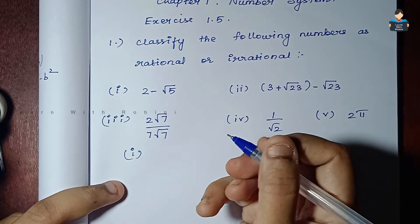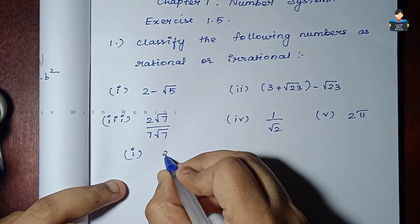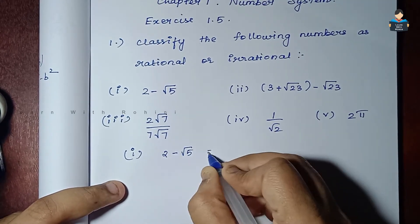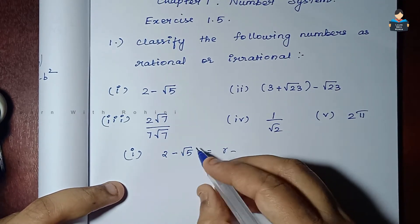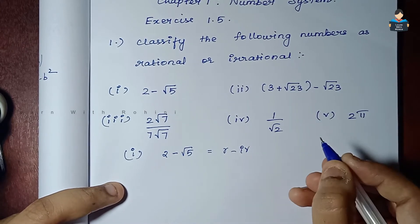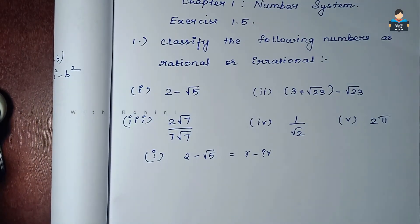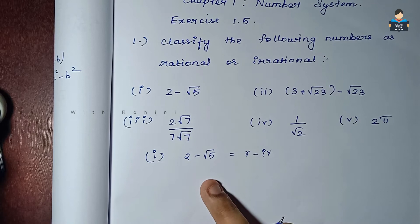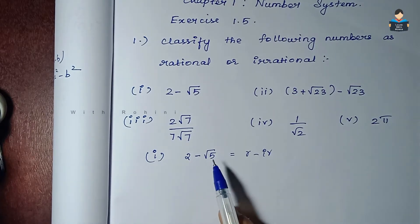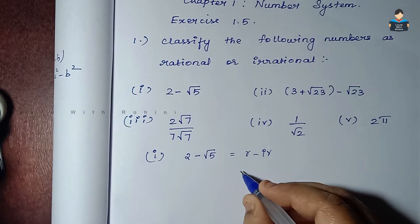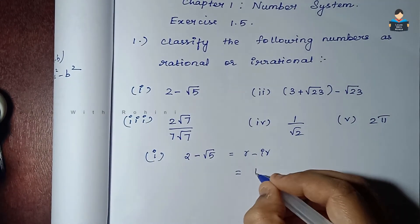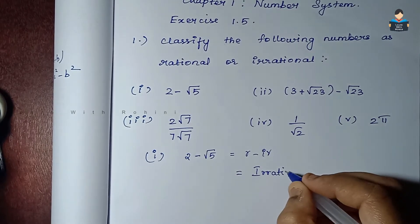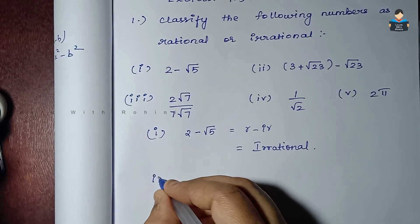First subdivision: 2 minus √5. Here, 2 is a rational number and √5 is an irrational number. The difference of a rational number and an irrational number is always irrational. So the answer is irrational.